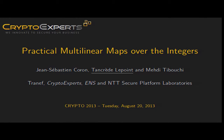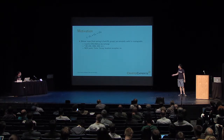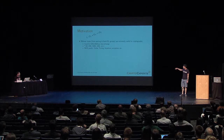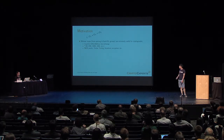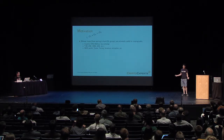Let's start with a little motivation. Bilinear maps were introduced for cryptographic applications about a dozen years ago and they are really useful. They enable things we didn't know how to do before: three-party key exchange, attribute-based encryption, identity-based encryption, non-interactive zero-knowledge proofs, and a lot of other things.